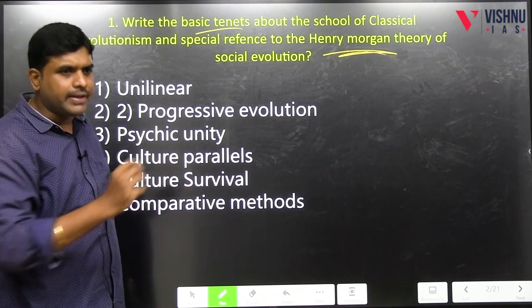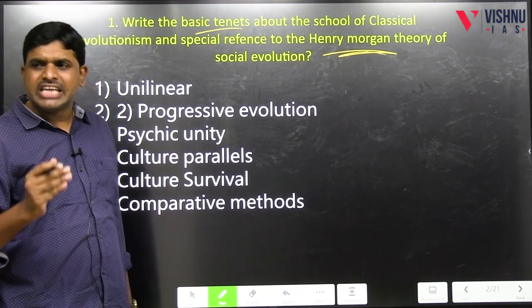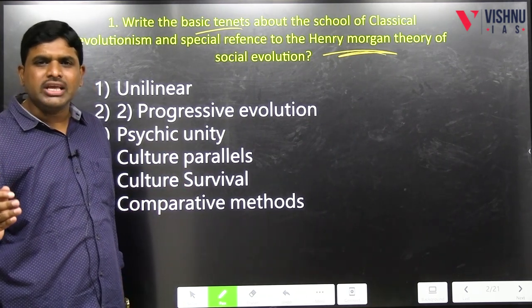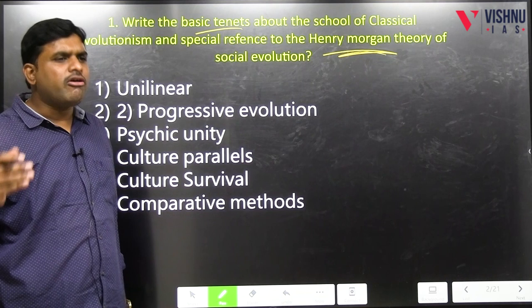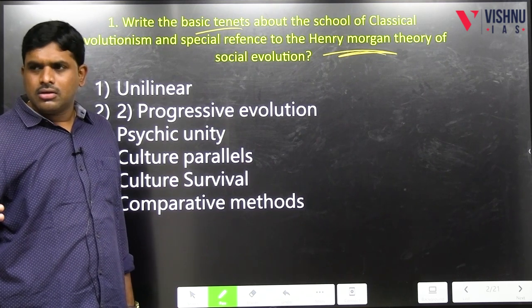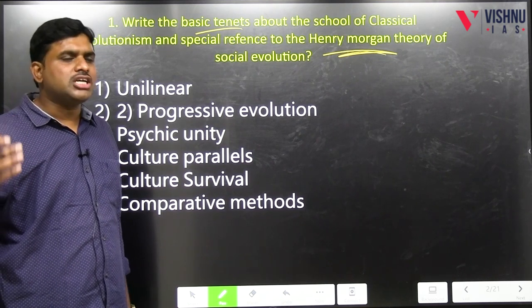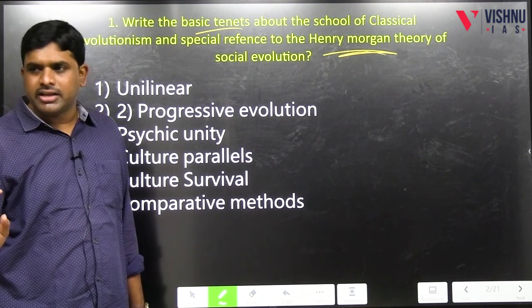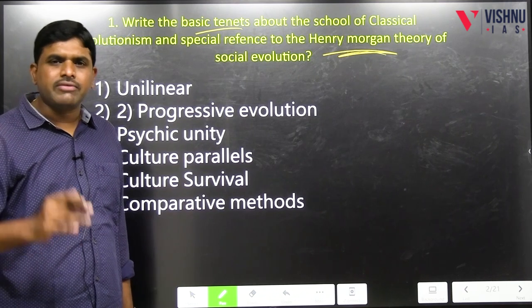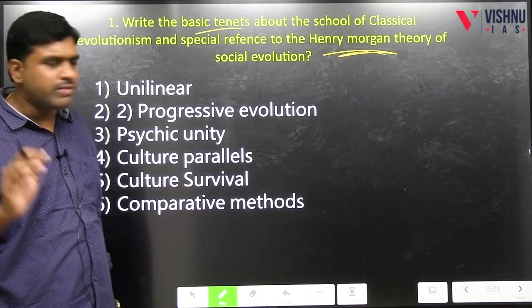Number 1: Unilinearity. The stages of evolution are one after the other — stage after stage, but not spontaneous. For example: savagery, barbarism, civilization.